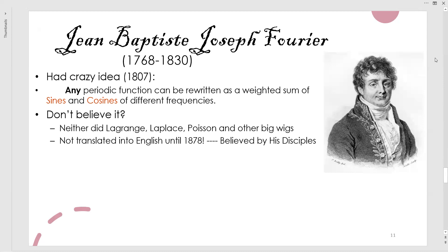But his disciples believed in his work. After his death, they went to his library to look at what he had done and found some scriptures on the board as well as in papers. They found that these equations were very good and decided to translate them into English and make them world famous. Yes, it's true — his disciples were the ones who believed in his work, and this is called the most famous Fourier Series.